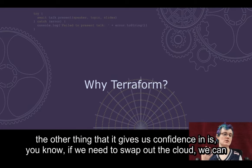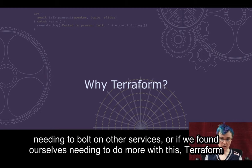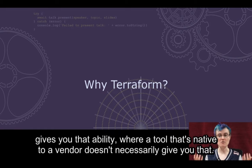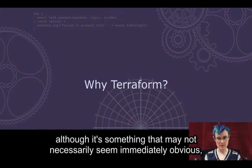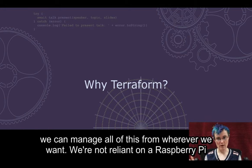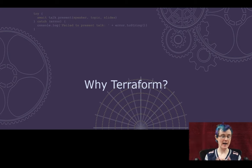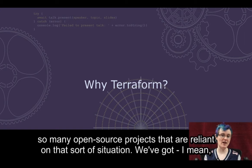Part of the reason this works so well is because it is very modular — we can plug and play, pull bits out and plug in other bits as needed. Terraform Cloud and the HashiCorp tools as the backbone are what make that possible. Because Terraform is so widely used, supported by a lot of clouds, and there are a lot of community-produced providers. It also gives us confidence that if we need to swap out the cloud, we can do that very easily. And from any machine, anywhere, as long as the three of us have our password managers, we can manage all of this from wherever we want. We're not reliant on a Raspberry Pi in someone's house running on an unstable internet connection — and there are so many open source projects that are reliant on exactly that sort of situation.